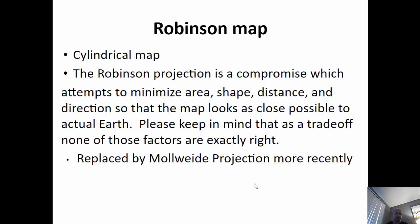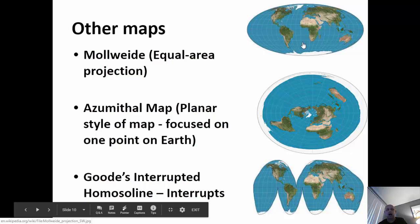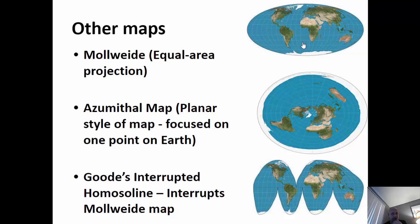Robinson minimizes area, shape, distance, and direction errors so the map looks as close as possible to Earth. More recently it's been replaced by something called the Mollweide projection, which has become much more popular in modern times — National Geographic switched over to it since the 1980s. The Mollweide projection is basically the new version of the Robinson, developed to build on Robinson and try to reduce the error even further.